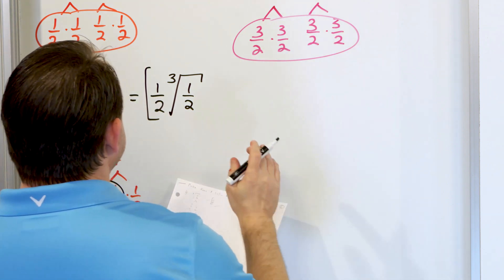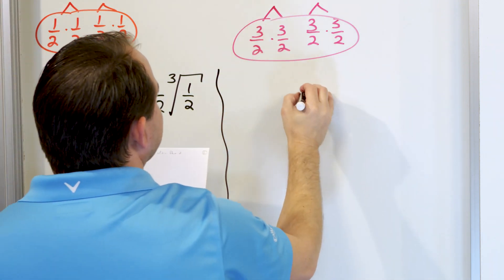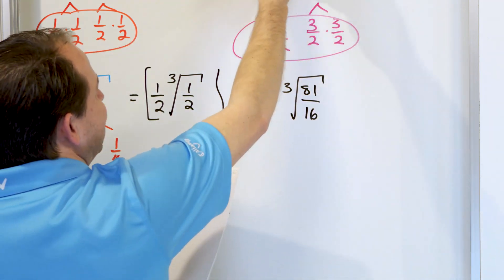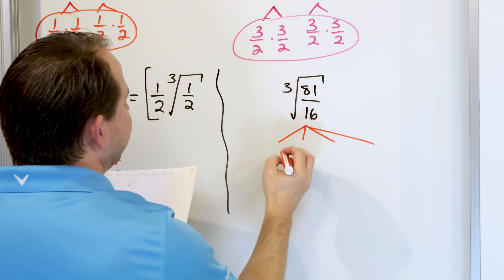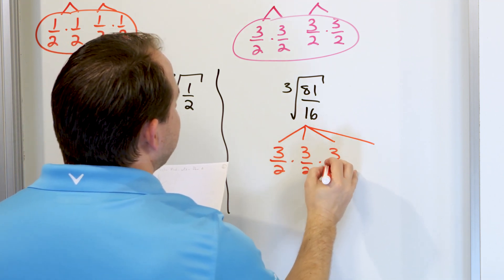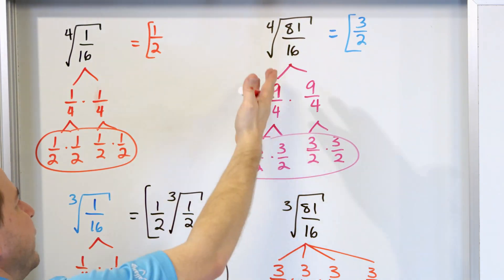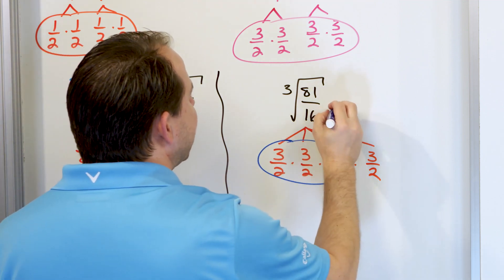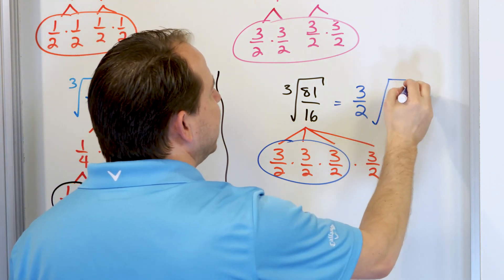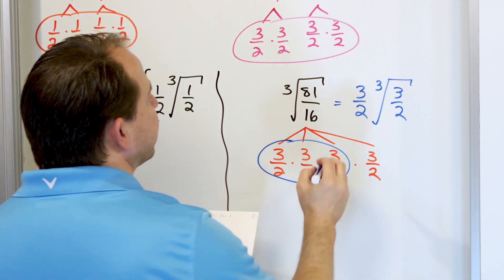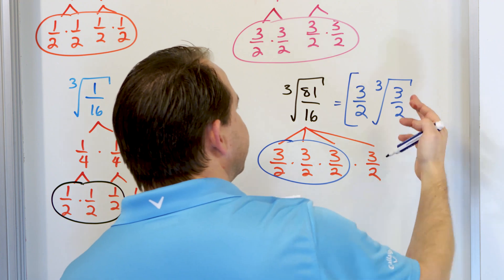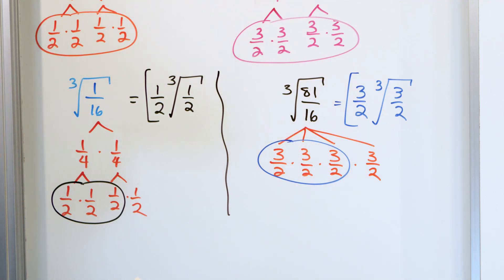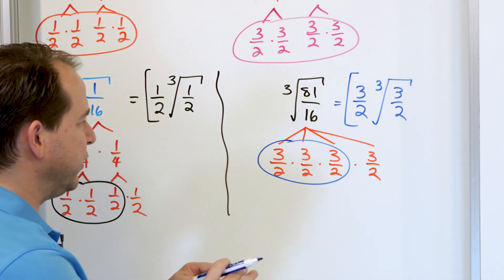For the next problem, notice we're doing a parallel with what we did before. Let's take 81/16 and take the cube root instead of the fourth root. We have exactly the same factor tree — four branches: 3/2 times 3/2 times 3/2 times 3/2. Now that it's a cube root, I'm looking for triplets. I see a triplet, so I pull out 3/2. The leftover orphan stays under the cube root, which is 3/2. So the answer is 3/2 times the cube root of 3/2. Again, you don't generally want fractions underneath your radical, so I'll teach you later how to simplify this further using more properties of radicals.